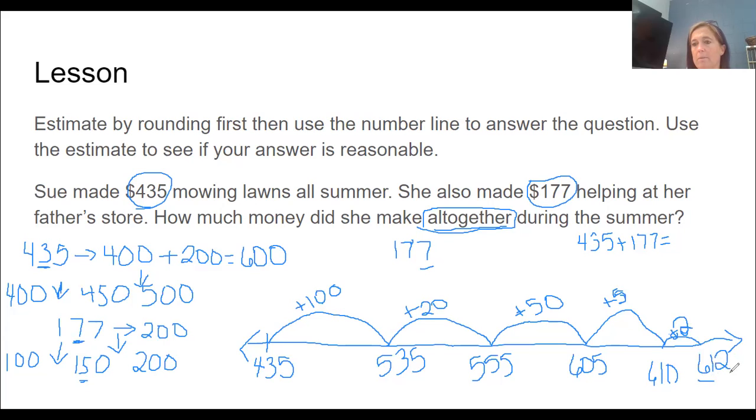So our total amount is 612. Now 612 what? Our total amount, because remember, this is $435, $177, which then gives us $612. It's hard to make my money symbol with this marker. So our total is $612. So Sue made $612 during the summer with her two jobs.